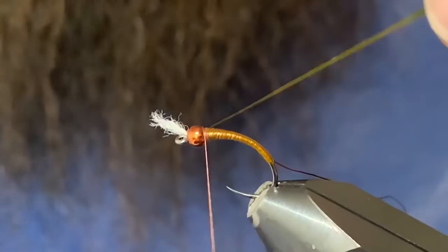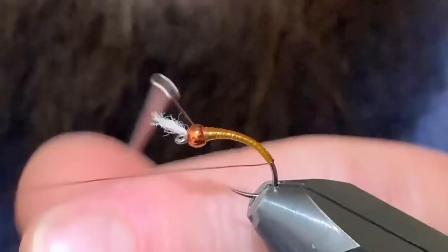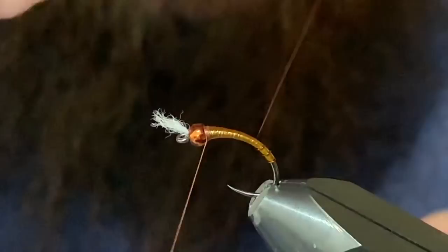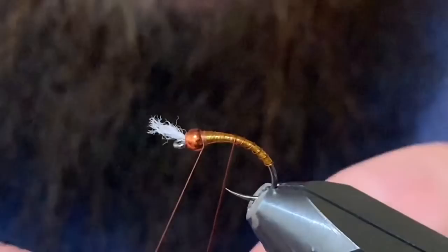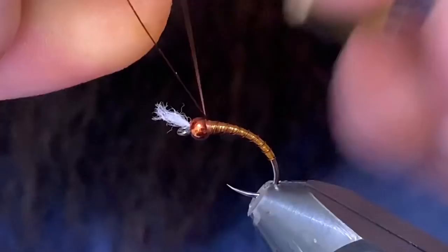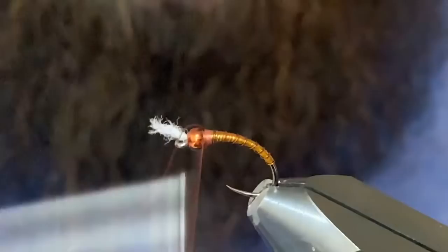Snip out our excess and just go ahead and rib the fly. That looks pretty good. Come in there, tie that wire off, a few wraps.